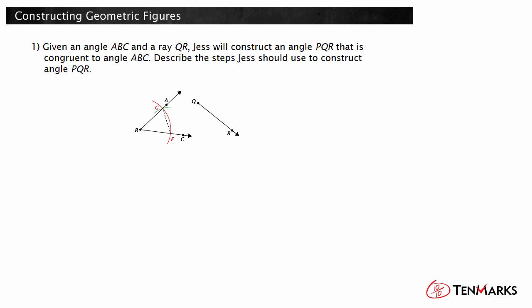Remember, the construction starts with only angle ABC to be copied and ray QR, which will be a side of the angle to be constructed. The construction involves creating these two congruent triangles. Because the triangles are constructed as congruent, the angles at B and Q are also congruent.